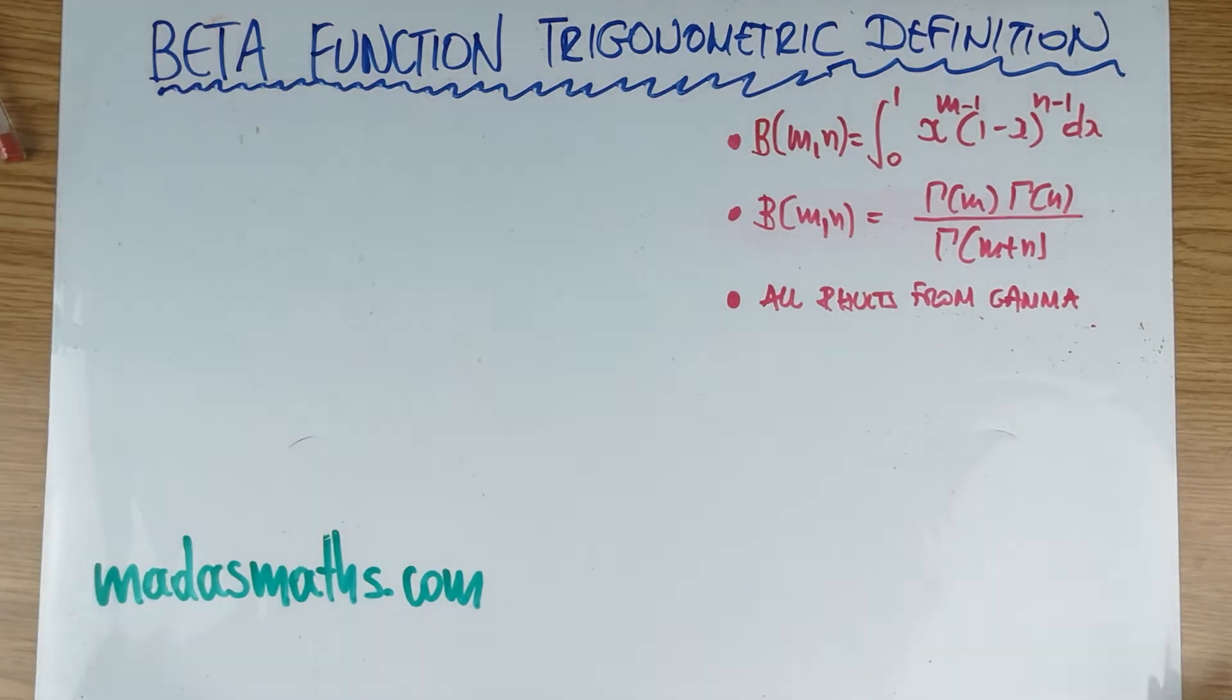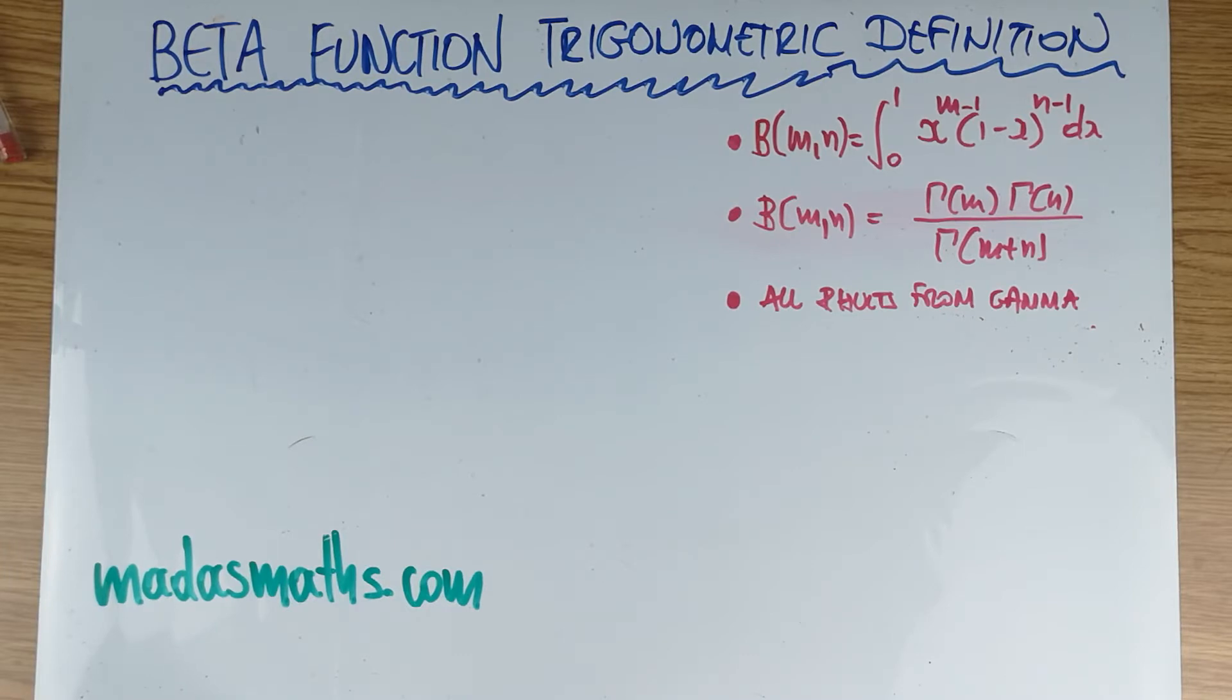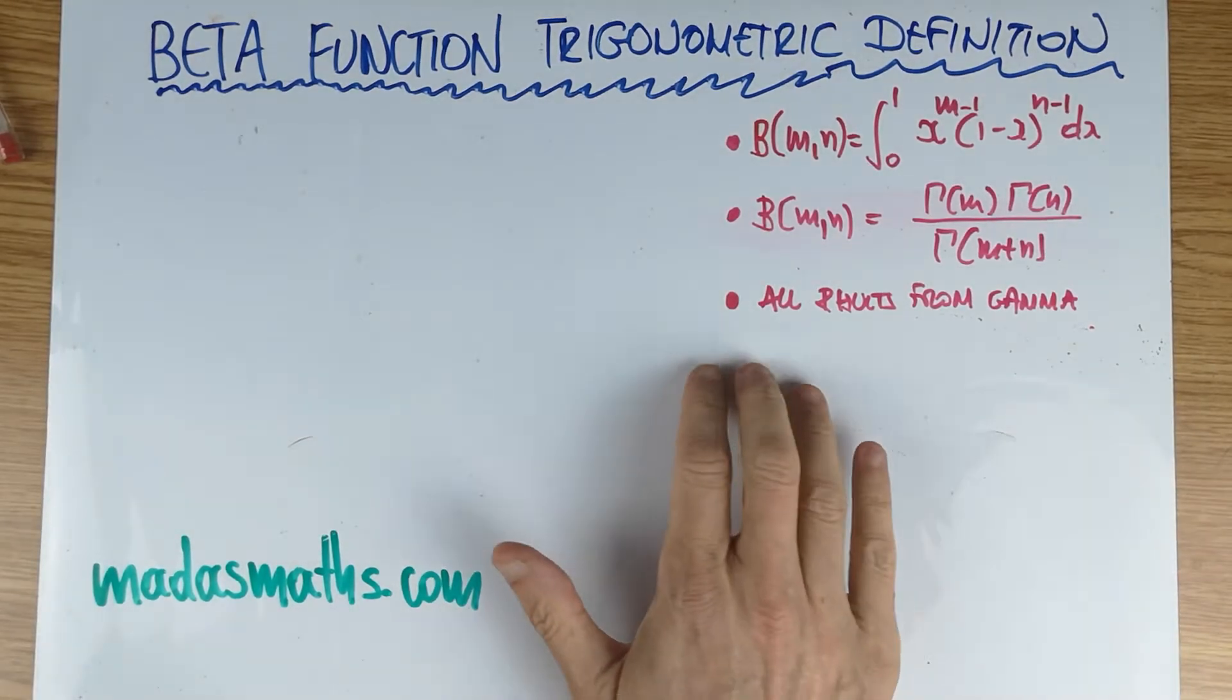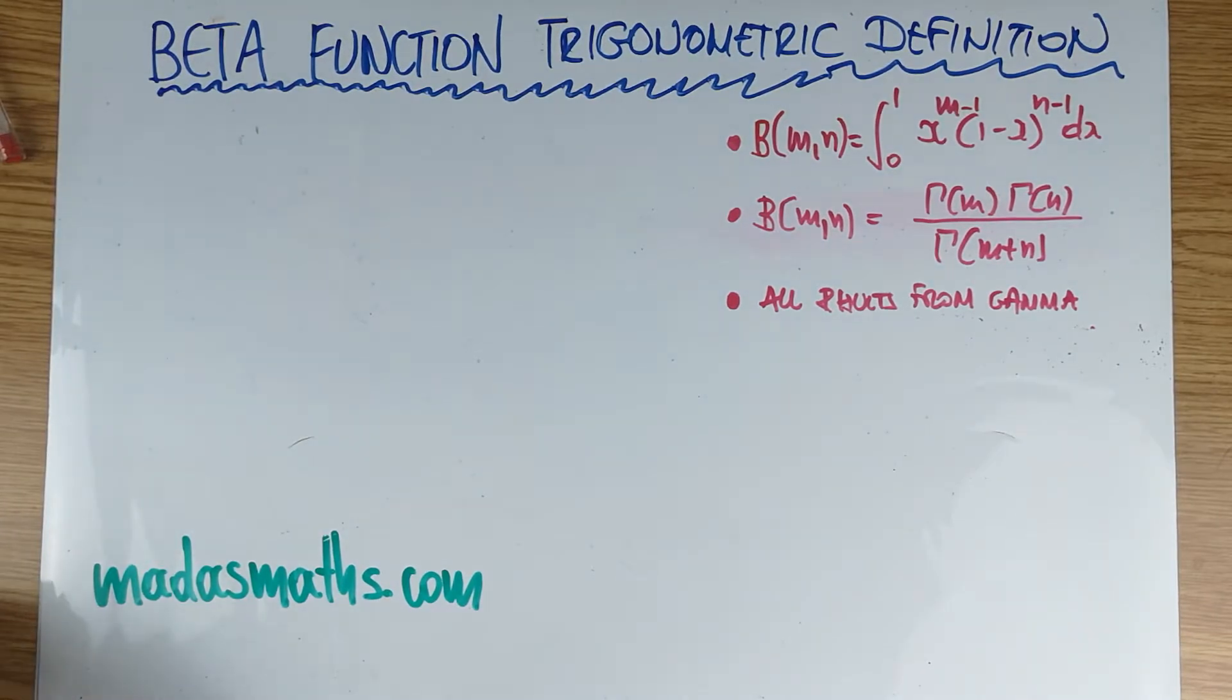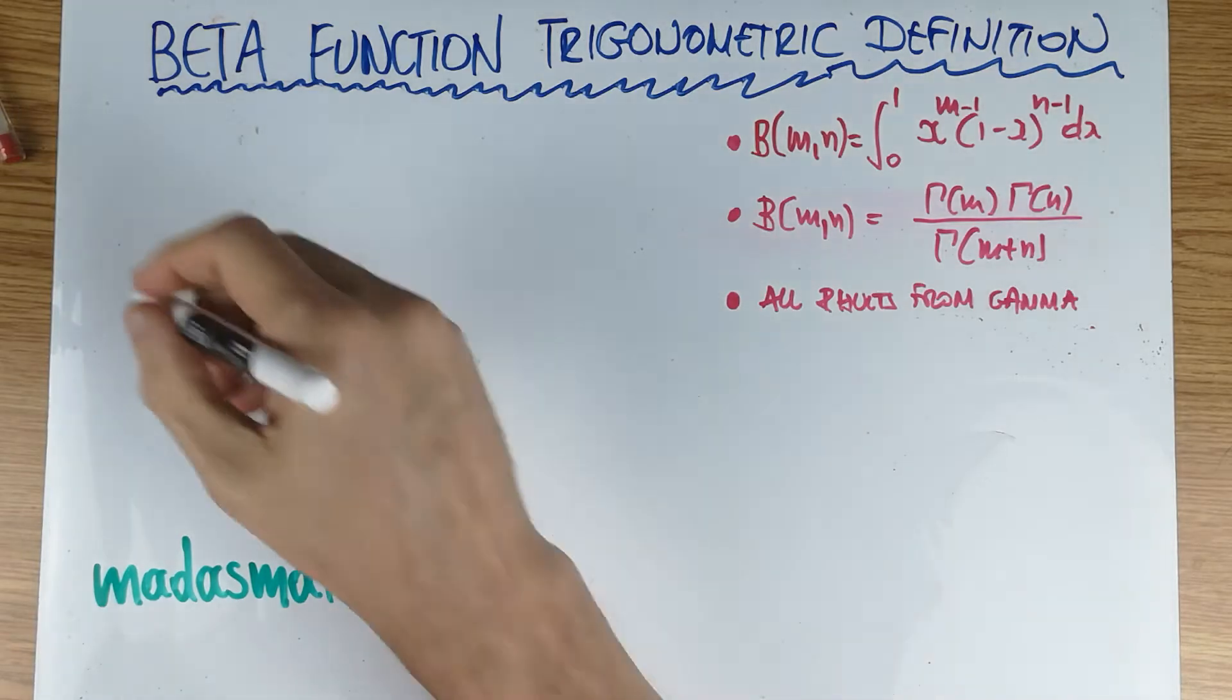Hello and welcome back. Second lecture on the beta function. Today we're going to be looking at the trigonometric definition of the beta function. Very useful, comes up an awful lot.